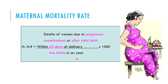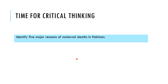Additional causes of high maternal mortality in Pakistan include poor abortion services, medical conditions associated with pregnancy, poor natal care management, inadequate healthcare service provision, obstructed labor, delayed labor, pregnancy complications, postpartum hemorrhage, and leukemia. Maternal mortality rate is a sensitive indicator of healthcare service provision to the community. It is time for critical thinking — identify the five major reasons for maternal deaths in Pakistan.